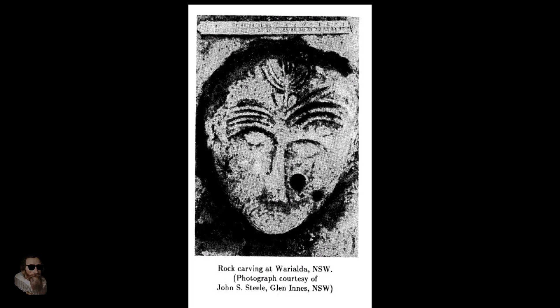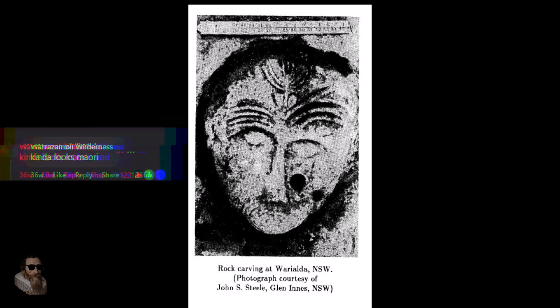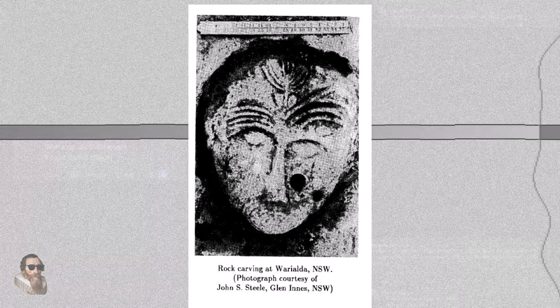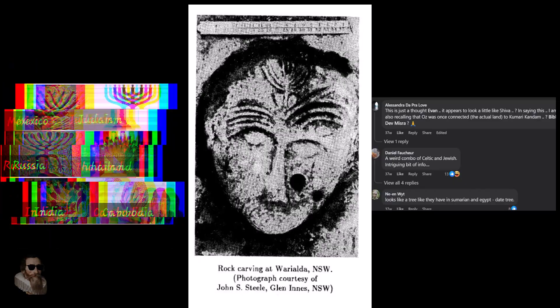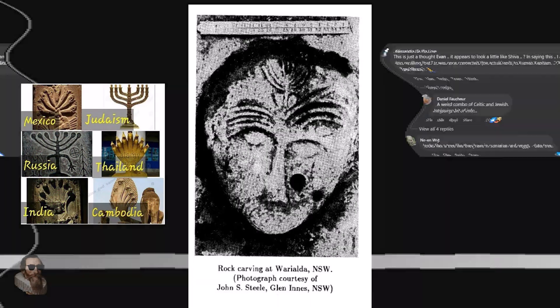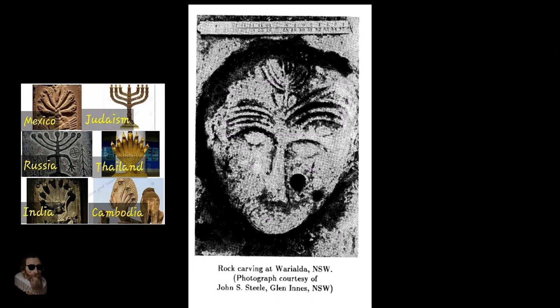The central vertical element with symmetrically branching arcs immediately invokes the menorah form — a symbol long associated with sacred light, divine presence, and cosmic order. Yet this same structure is also a near-perfect match for a well-documented plasma discharge morphology as identified by Dr. Anthony Peratt. I am, of course, speaking about the squatter man.